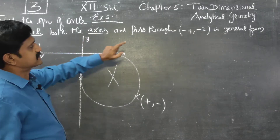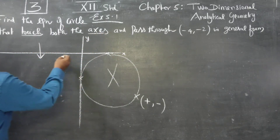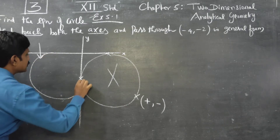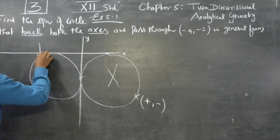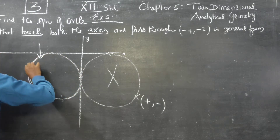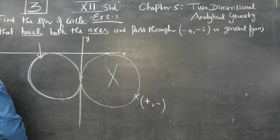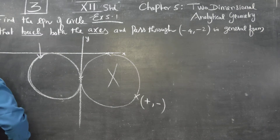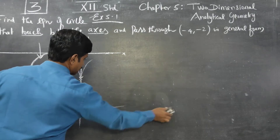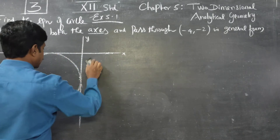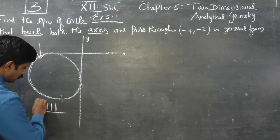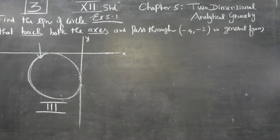The circle touches the x-axis and y-axis. Since the circle touches both axes and the point minus 4 comma minus 2 lies in the third quadrant, this circle is positioned in the third quadrant touching both axes.